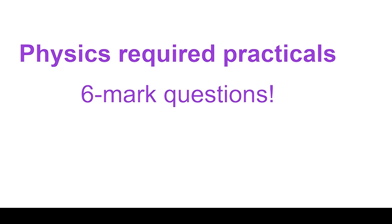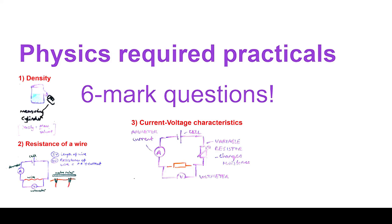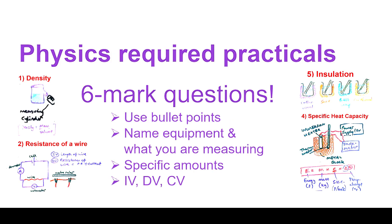In this video we're going to look at one practice exam question for each of the five required practicals for physics paper one: density, resistance of a wire, current-voltage characteristics, specific heat capacity, and insulation if you're doing separate science. For each one, use bullet points, name any equipment you're using and what you're measuring, mention specific amounts, and talk about variables where you can.